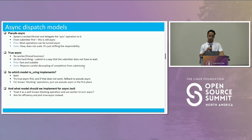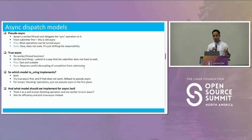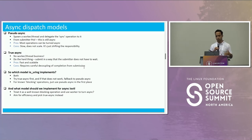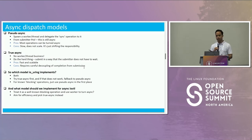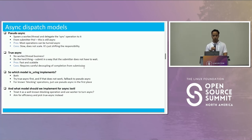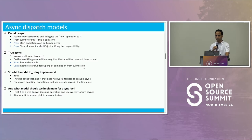What I mean by pseudo-async is that you have a synchronous operation, and in order to turn it into async, you decide to offload it to a separate thread. When you do that, you start giving the impression that the whole thing has become async — and from some metrics standpoint, this is how it is. The advantage of this scheme is that most operations can be turned async — any existing synchronous syscall can be turned async this way.